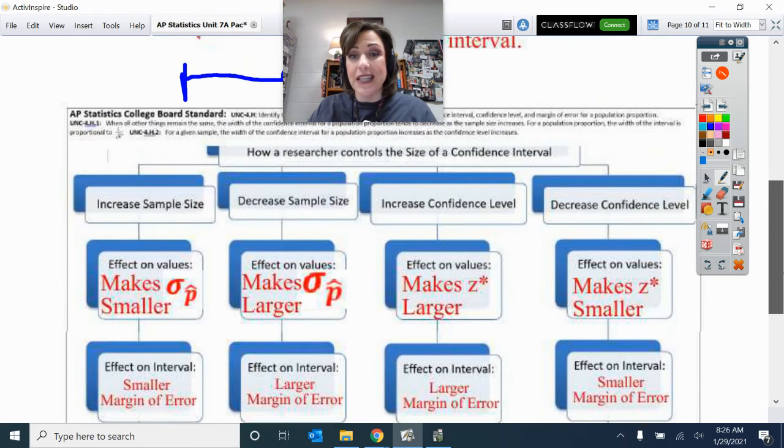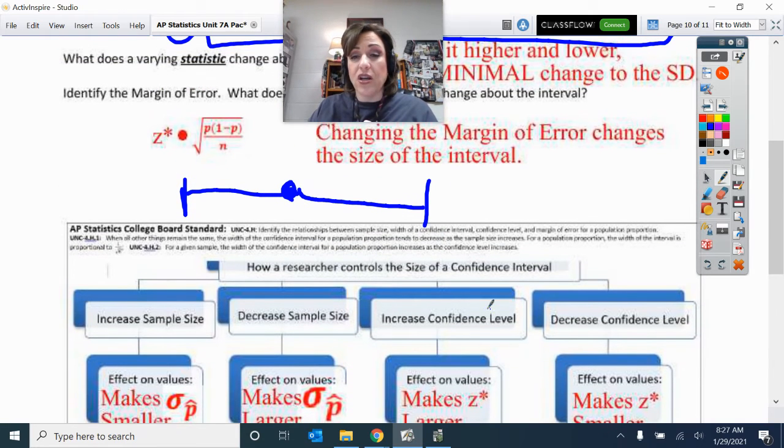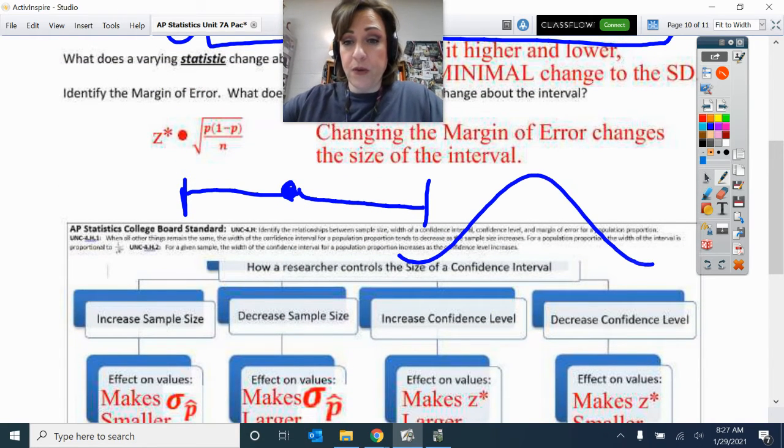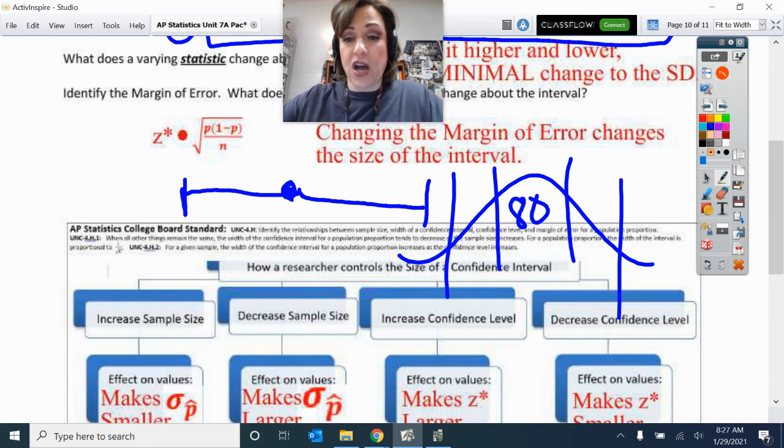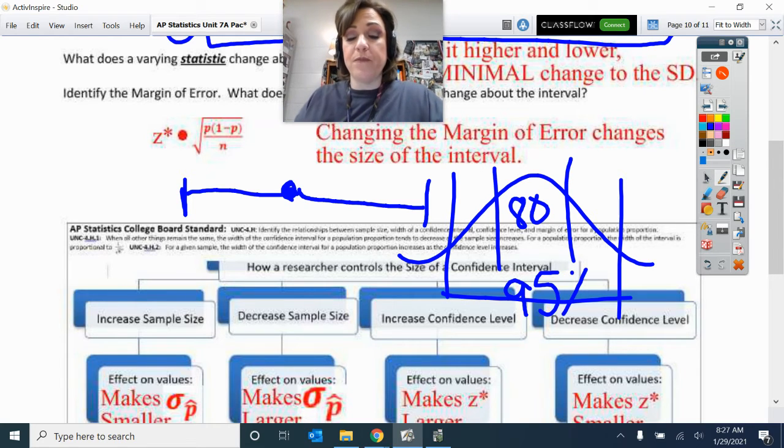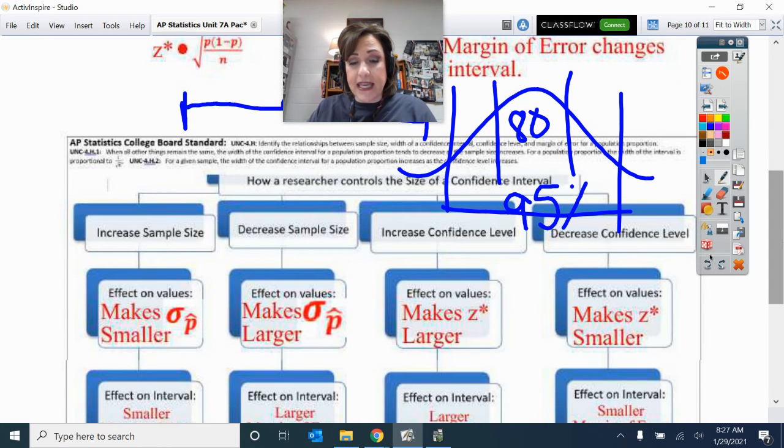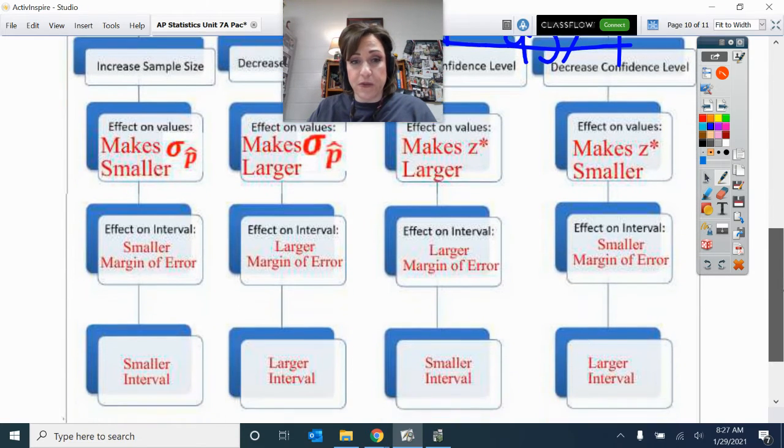Now confidence level. Let's talk about confidence level. 80% confidence might look like this, whereas 95% confidence might look like this. So you can see increasing the confidence level is making a larger critical value, Z star.